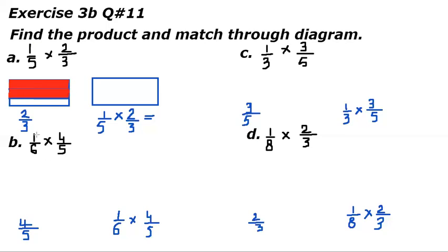Two-thirds: out of three, two parts are colored. Now we will draw the diagram for one-fifth of two-thirds. Look at the denominator of the second fraction which is three — we have to cut this box into three parts in a horizontal pattern. This is horizontal cutting.